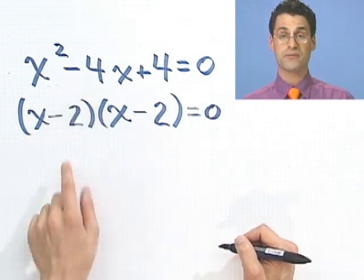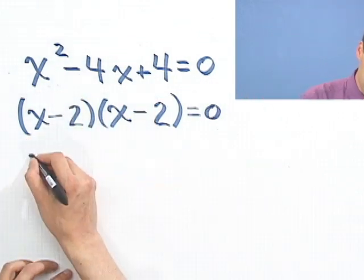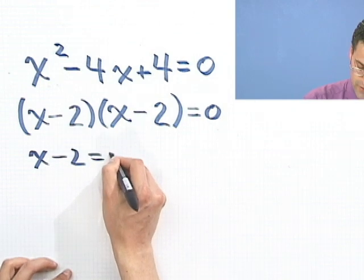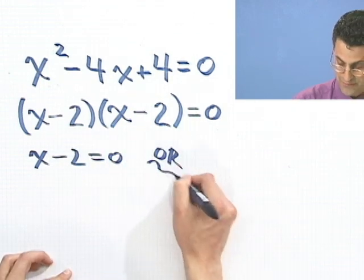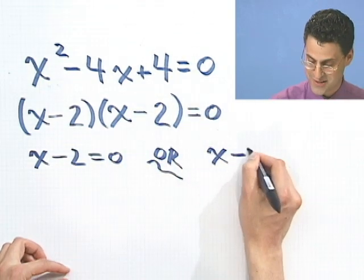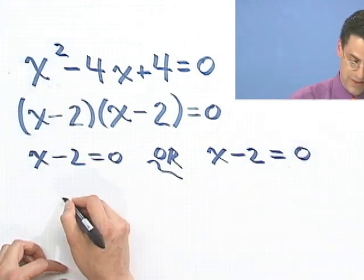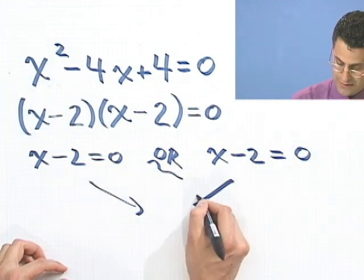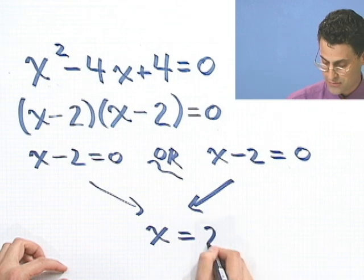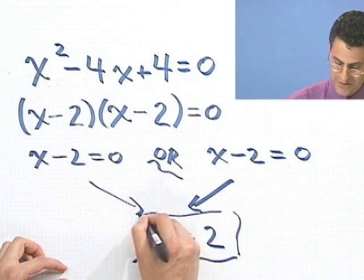Well, look. It turns out this was actually a perfect square. So I have two solutions, either x minus 2 equals 0 or the same thing, x minus 2 equals 0. So in either case, what I see is x equals 2. That's sort of fun.